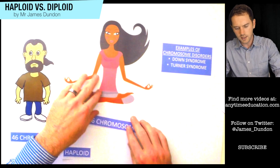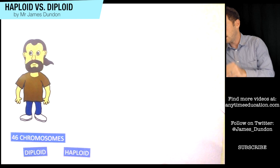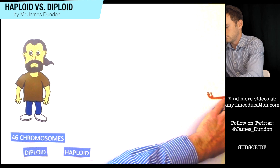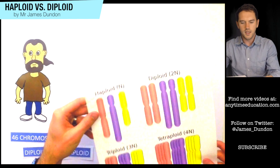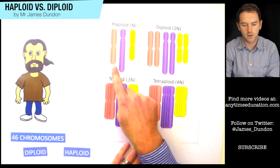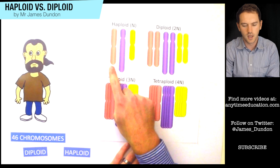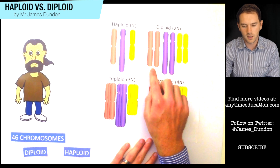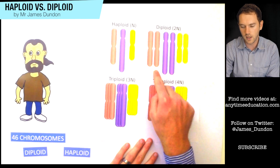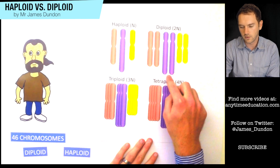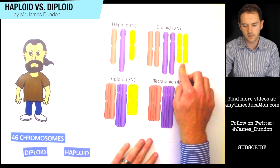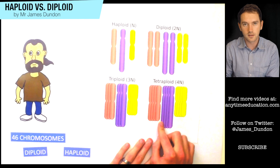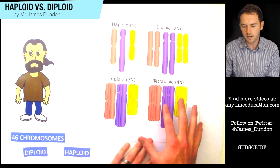But haploid and diploid are not the only versions we can get — there's actually a whole range. We can get haploid, where we've only got one chromosome; diploid, where we've got two homologous chromosomes for each pair; triploid, where we've got three of them; or tetraploid. Those are the more common varieties you're going to encounter.